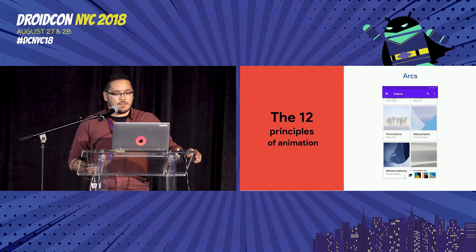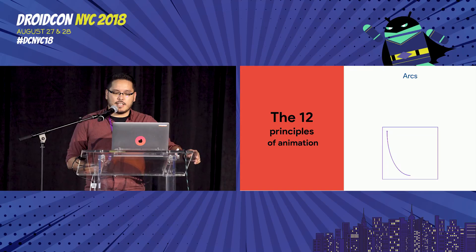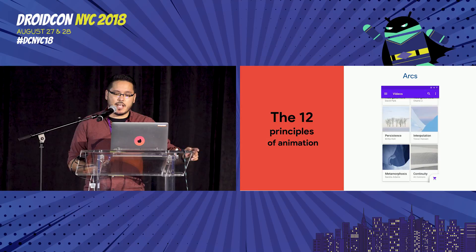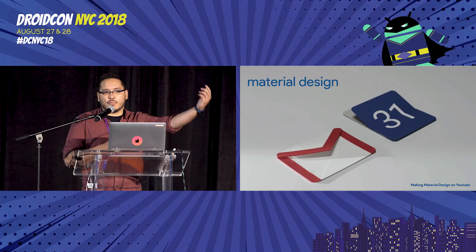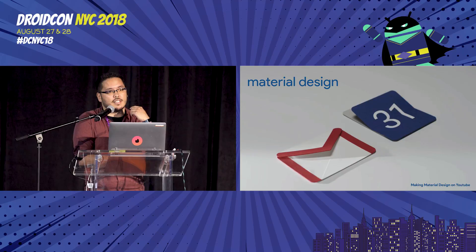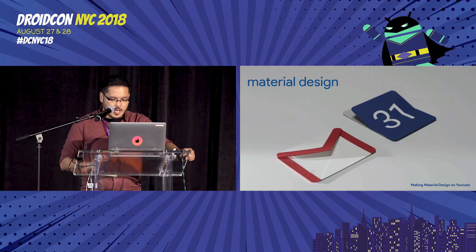Material design also has arcs — it's there to help us feel at home and make things familiar. We have it in another example and we also had it in Google Play before, which used a lot of arc animation. Those are some of the principles. If you're interested, I really recommend Disney's book — it's very, very good, and a very pretty book to put on your shelf too.